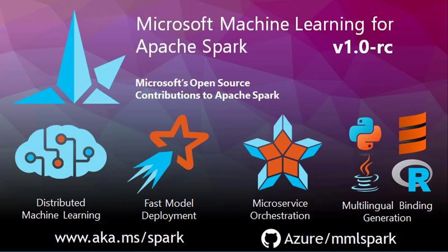Microsoft is really into the open source community now and is even developing additional components for Apache Spark. They've created a new open source library to help improve functionality and provide capabilities that help Spark process language better. The version they created is called MML Spark, designed to expand the distributed computing framework of Apache Spark in new directions. MML Spark adds deep learning and data science tools to the Spark ecosystem, including seamless integration of Spark machine learning pipelines from Microsoft Cognitive Services, LightGBM, and OpenCV.